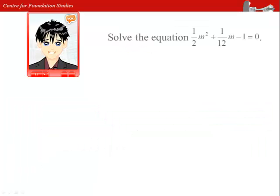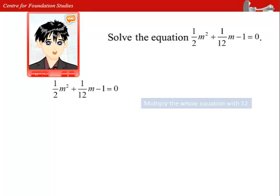Let us take a look at this question: half m², plus 1 over 12 m, minus 1, equals to 0. In this question, we can get rid of the fractions by multiplying 12 to the whole equation.